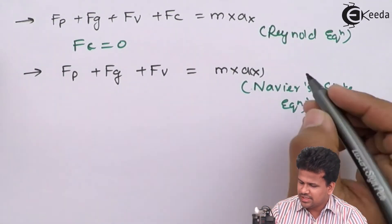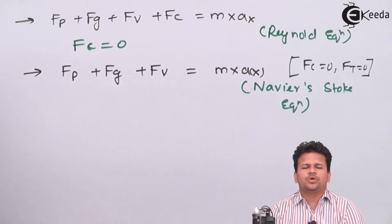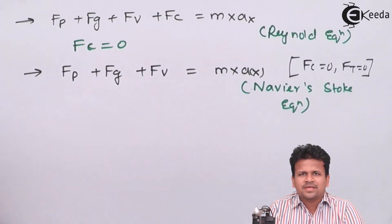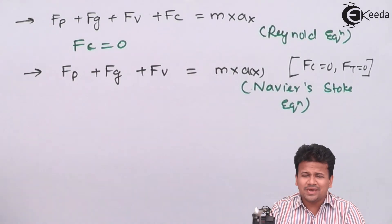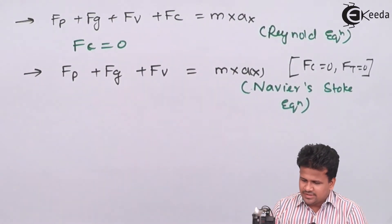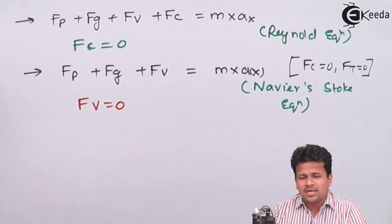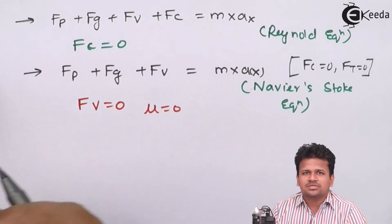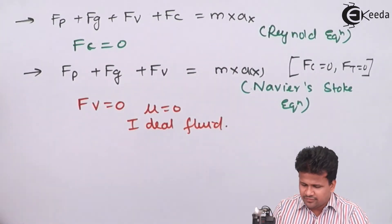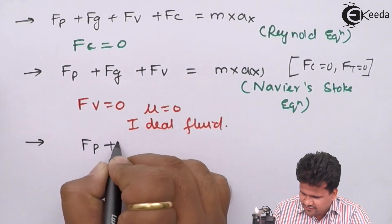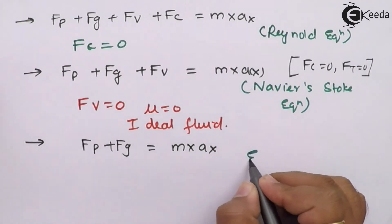In the Navier-Stokes equation, two things are zero: FC equals zero as well as FT equals zero. This means we assume the fluid is incompressible — no change in density — and the force due to turbulence is also zero. Only three forces act: pressure, weight, and viscosity. Now, if in the Navier-Stokes equation the force due to viscosity is also zero, that means viscosity is zero and the fluid is called an ideal fluid. For an ideal fluid, FP plus FG equals mass into acceleration in x direction. This equation is called Euler's equation.